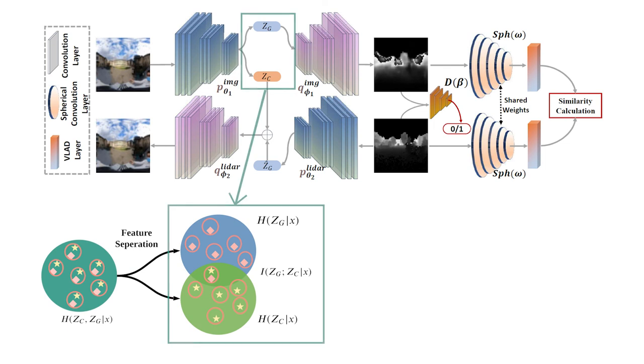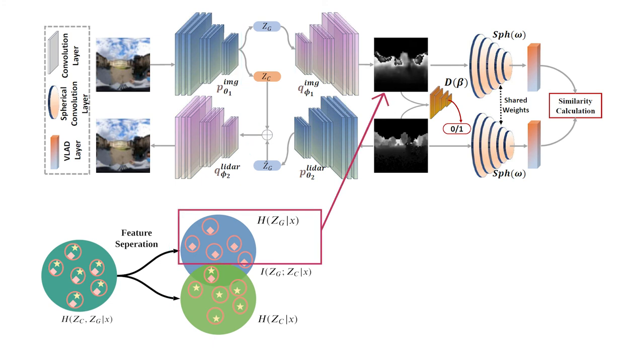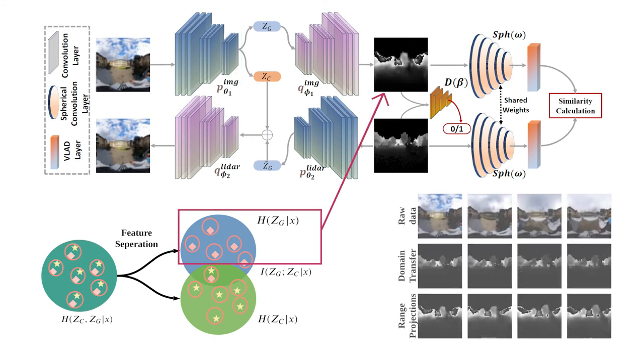Given one image, our domain transfer module can separate the geometric features from the environment condition features, and we are only using the geometric features to reconstruct the range predictions.